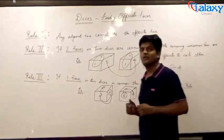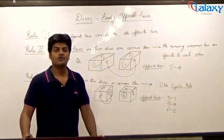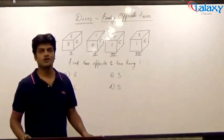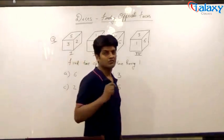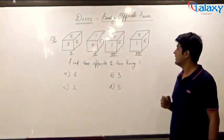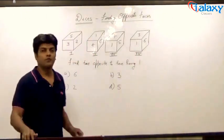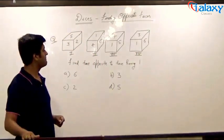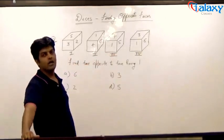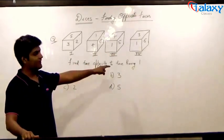Now, let us solve an example using all these three rules to further clarify the concepts. In this question, four positions of the same dice are displayed — one, two, three, and four — and we are supposed to find out the face which is opposite to the face having digit one.